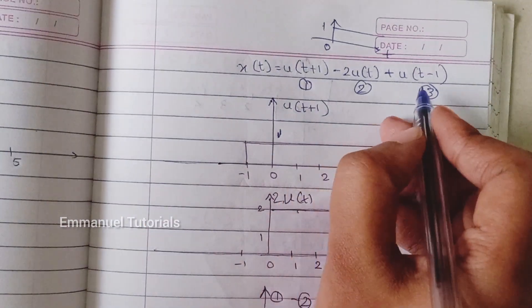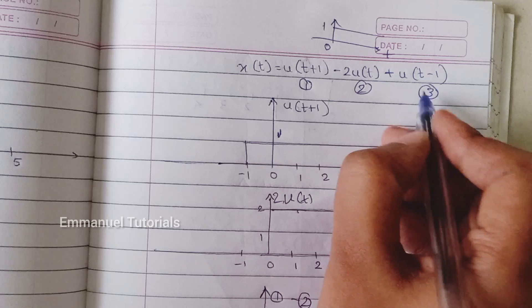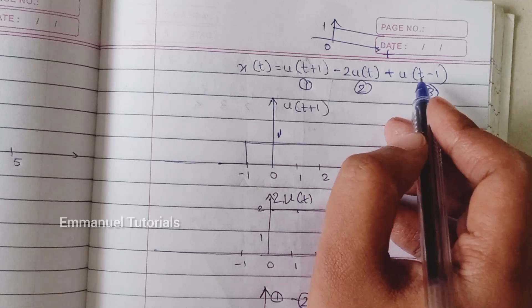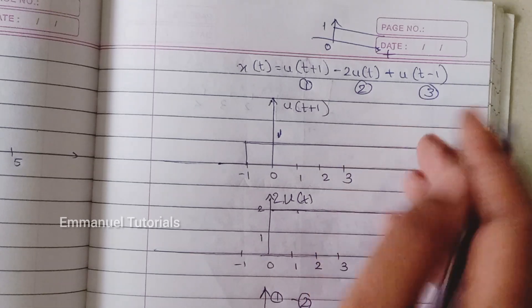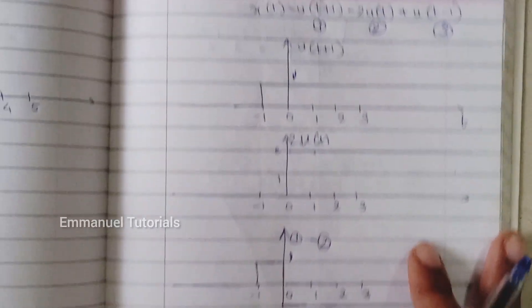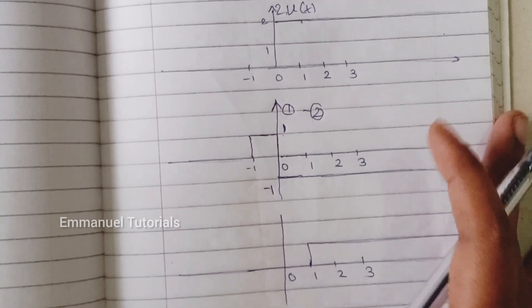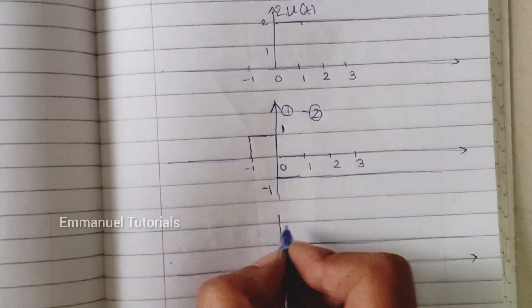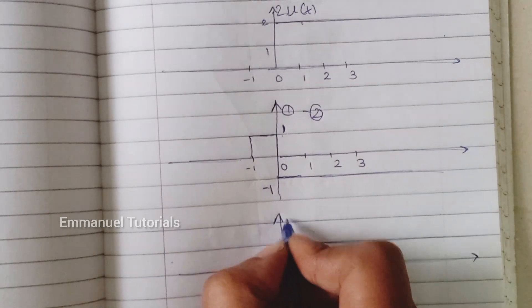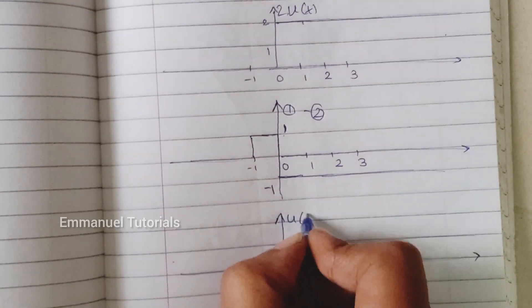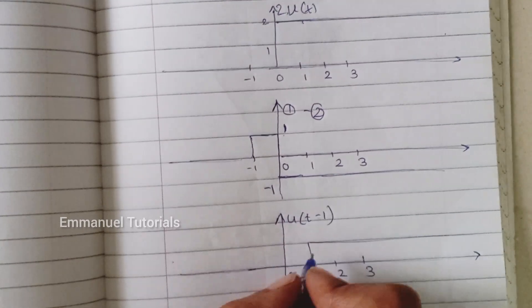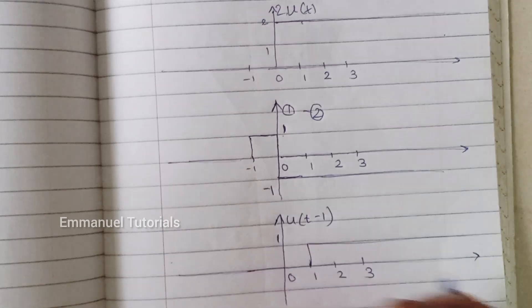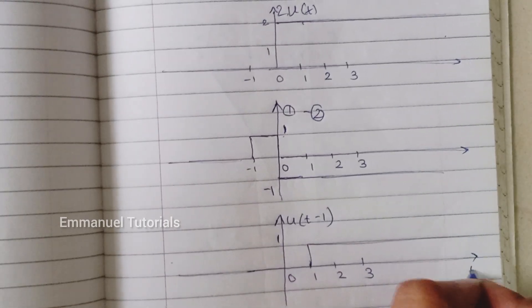Now we also add the last part of the signal, which is the third one — a delayed version of the unit step by one. Shifting to the right by one, this is u(t−1) with amplitude one.